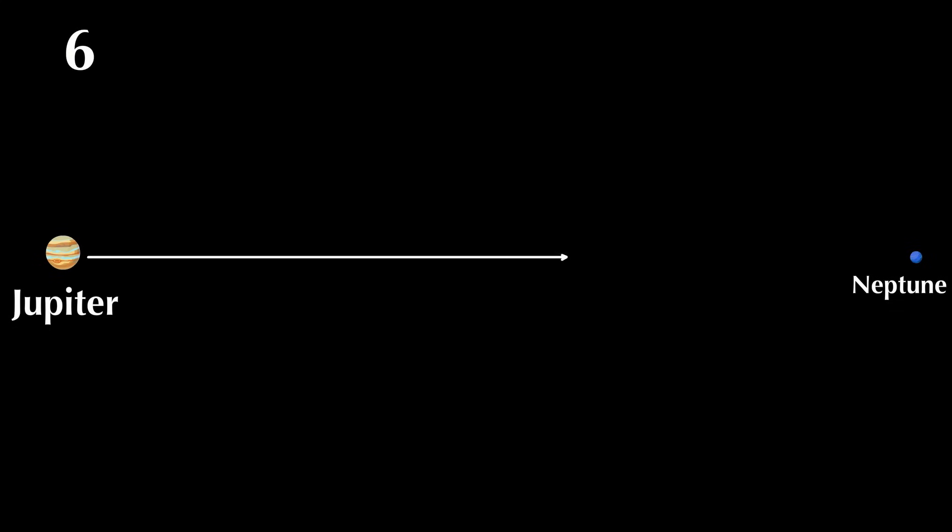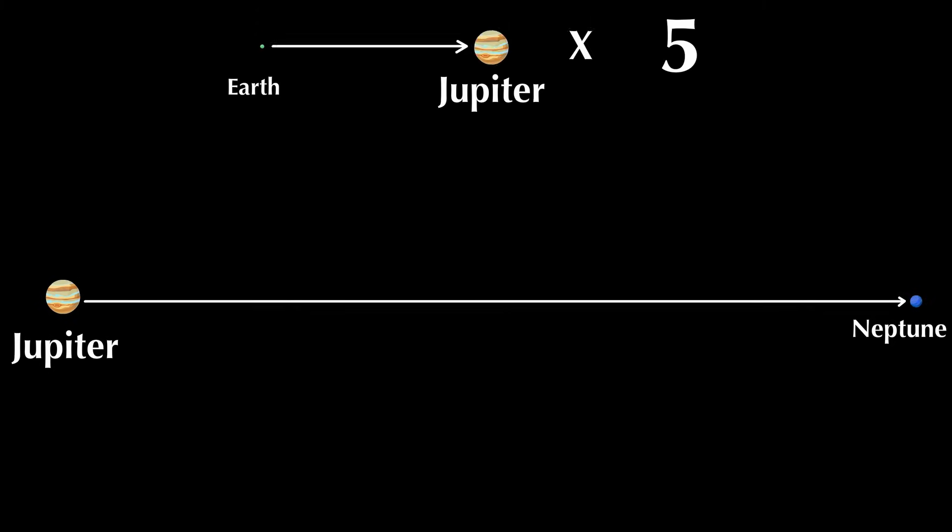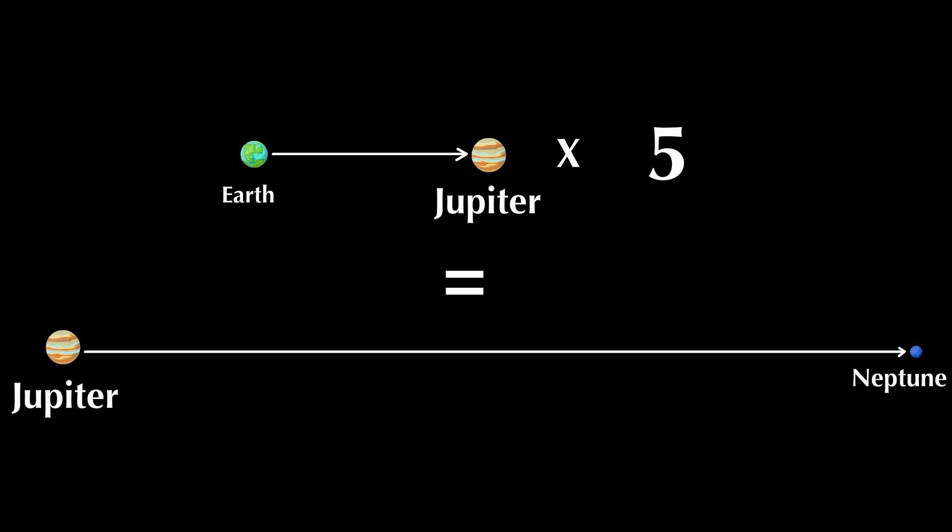Neptune is far away. I mean, really, really far away. The distance from Jupiter to Neptune is five times longer than the distance from Earth to Jupiter.